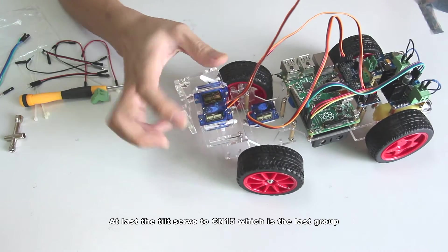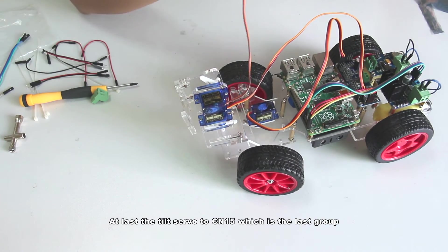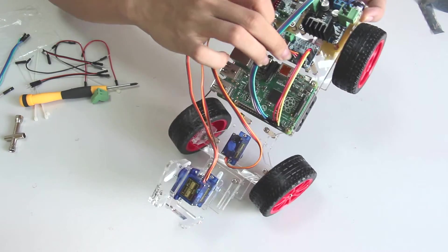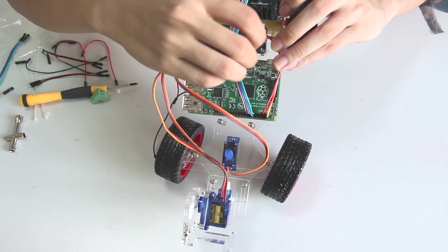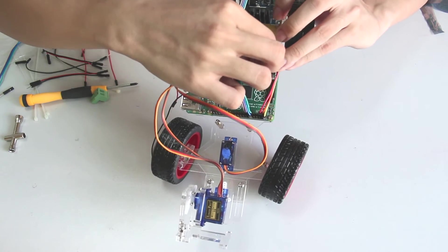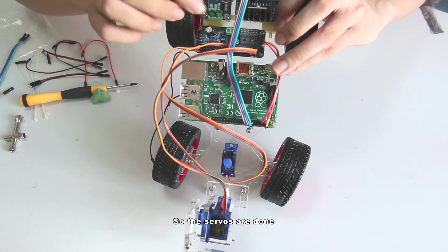At last the tilt servo to channel 15 which is the last group. Plug in the wires. So the servos are done.